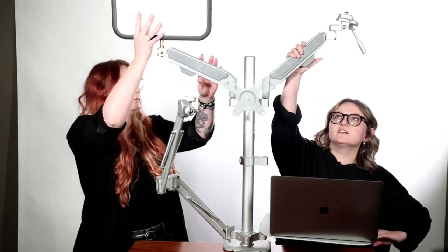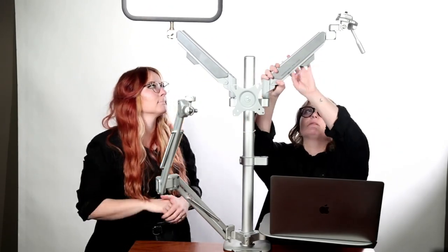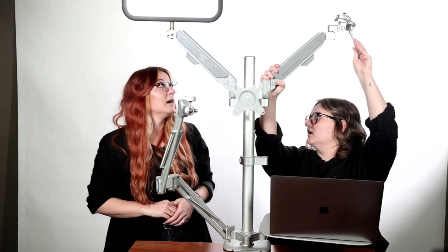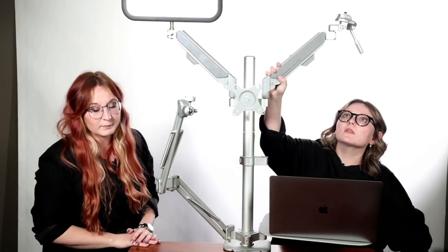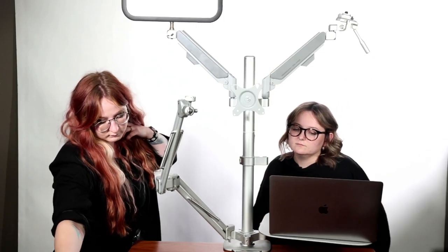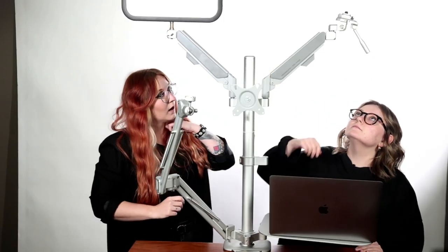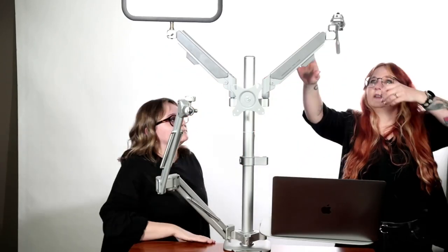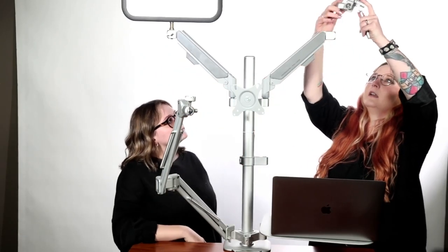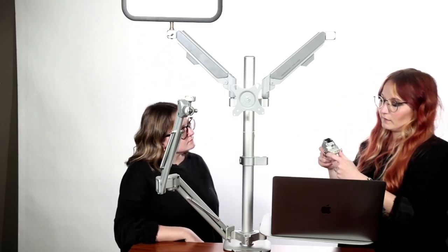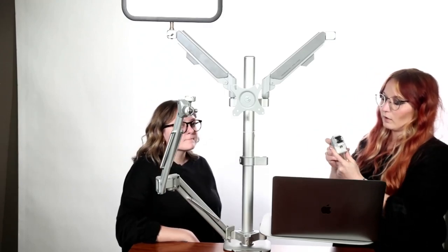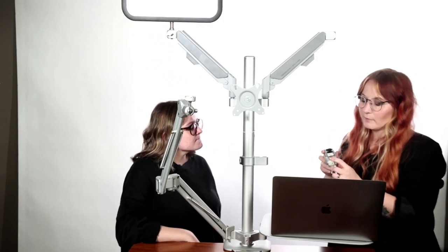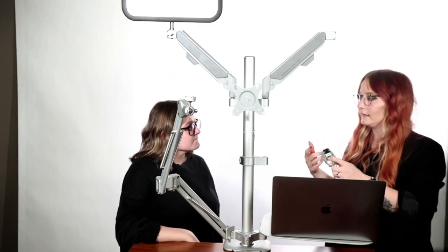We have this arm over here too. That one's going to be a three-way pan tilt head. On this guy, it's really cool because you're able to tilt it back and forth and pivot like this.